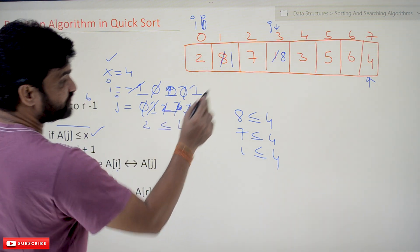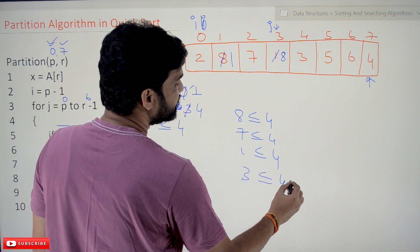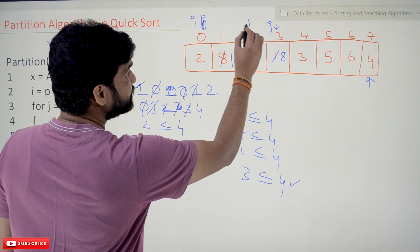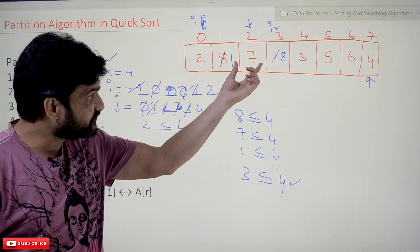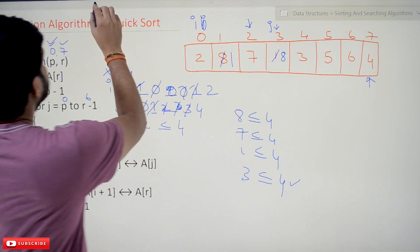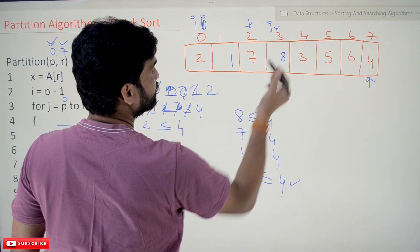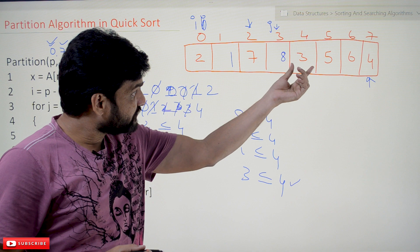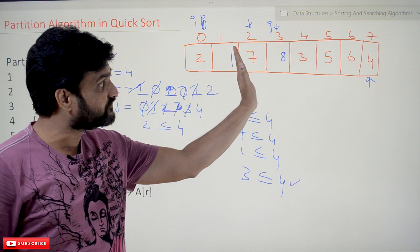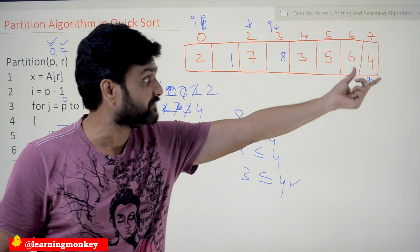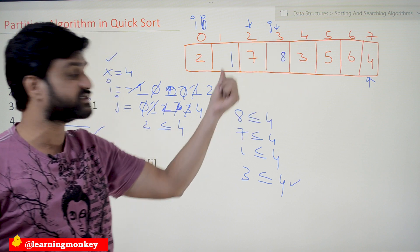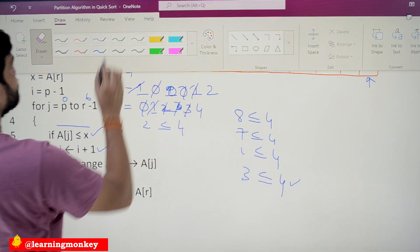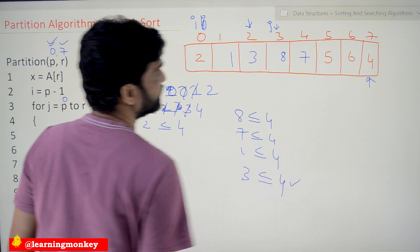The value of j is incremented to 4. a[4] is 3. Is 3 less than or equal to 4? Yes, it is true. So i is incremented to 2. We need to exchange a[i] (a[2] = 7) with a[j] (a[4] = 3). So 3 will be shifted to index 2 and 7 will be shifted to index 4. The point to understand: values less than 4 are shifting to the left-hand side, values greater than 4 are shifting to the right-hand side.